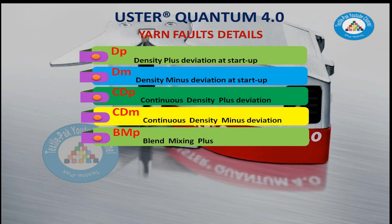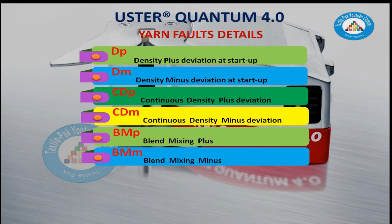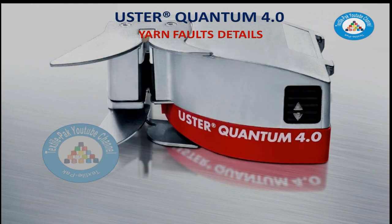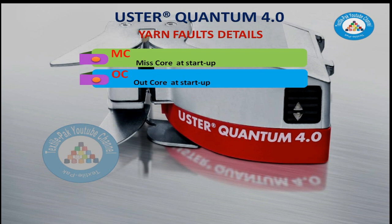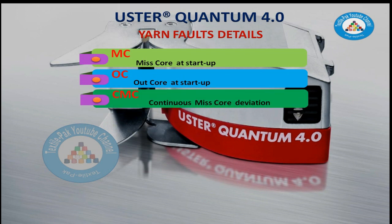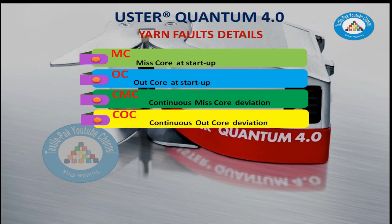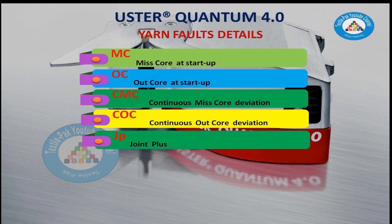BMP – Blend Mixing Plus, BMM – Blend Mixing Minus, MC – MISCore at Startup, OC – OutCore at Startup, CMC – Continuous MISCore at Startup, COC – Continuous OutCore at Deviation.